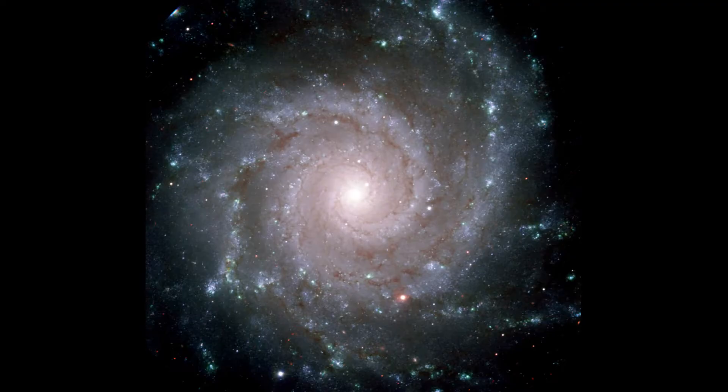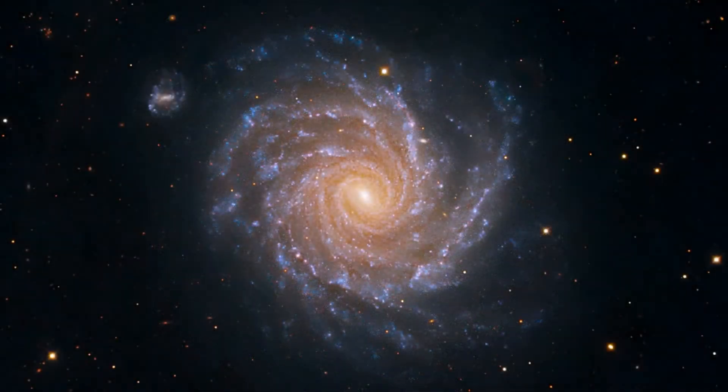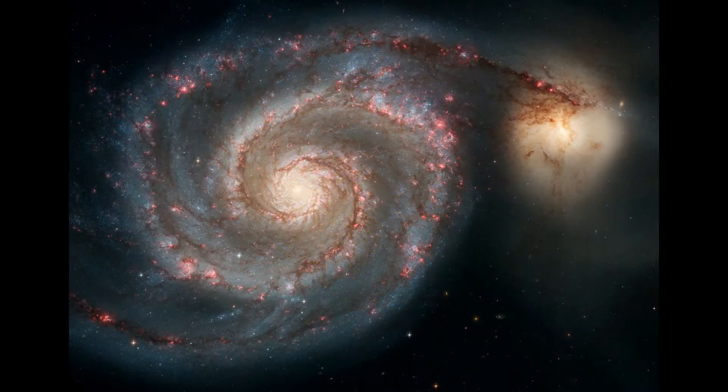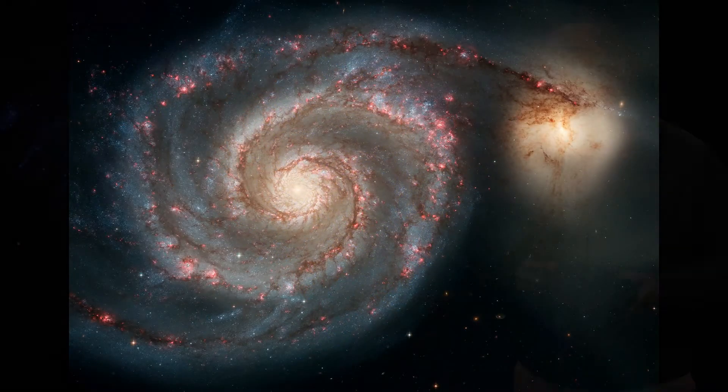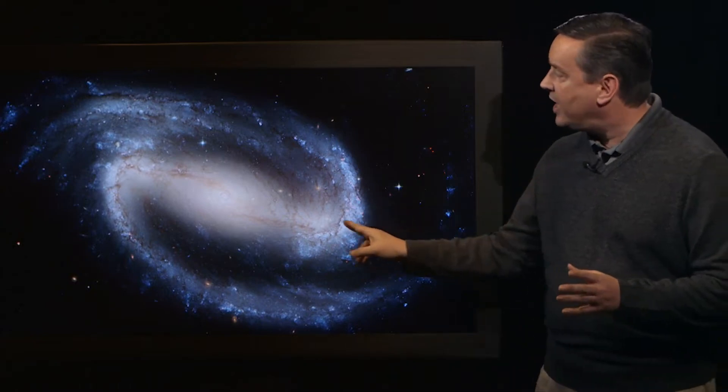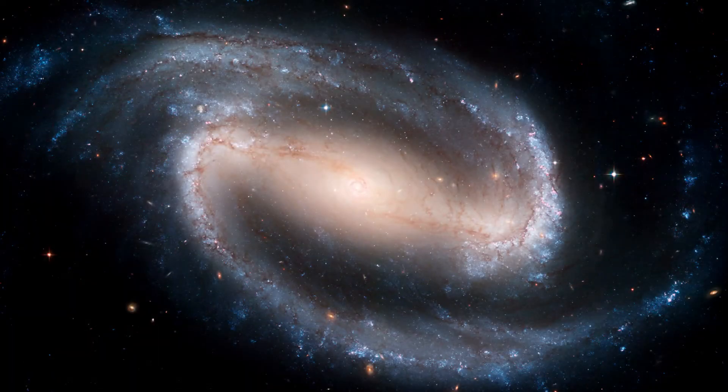Some spiral galaxies have many spiral arms, while others have just a couple. A good percentage of spiral galaxies have an elongated straight region across the middle. These are barred spiral galaxies.